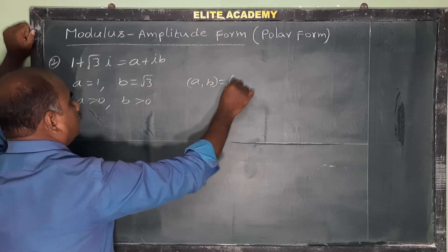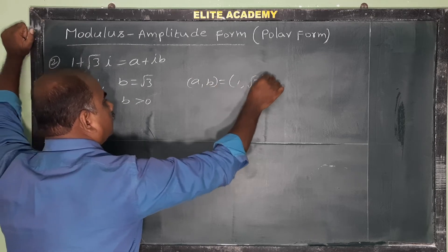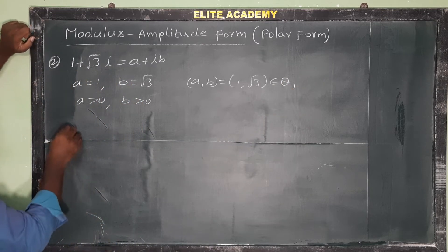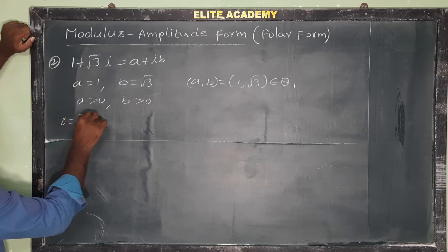Therefore, the point (1, root 3) belongs to Q1, the first quadrant. So r is equal to the square root of a square plus b square.